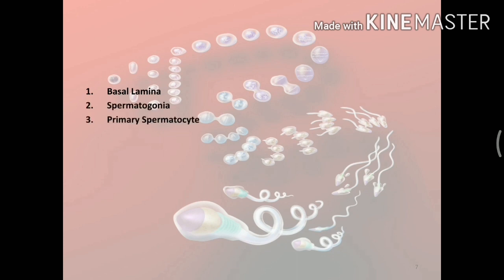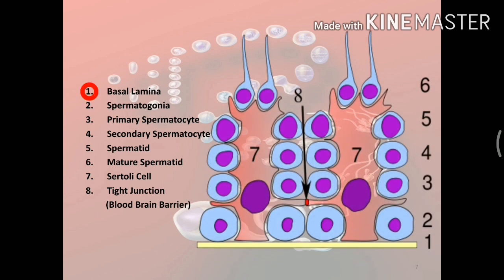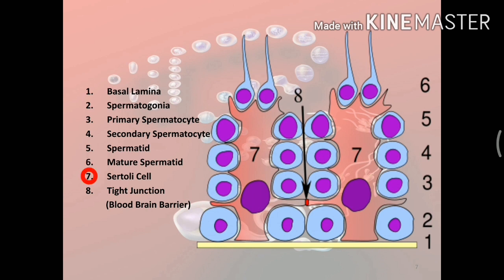More precisely, we can now look at the various stages of spermatogenesis. To begin with, the basal lamina is where the spermatogonia cells remain embedded. Second is the spermatogonia — the first cell from where spermatogenesis starts — which further results in primary spermatocytes, then secondary spermatocytes, which result in spermatids, and then transforms into mature spermatozoa. Sertoli cells provide nourishment to the growing cell for proper functioning of the process.